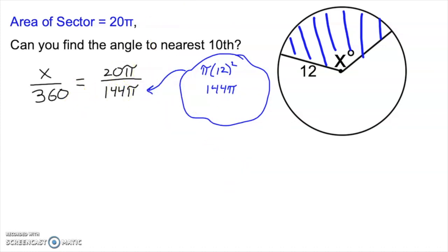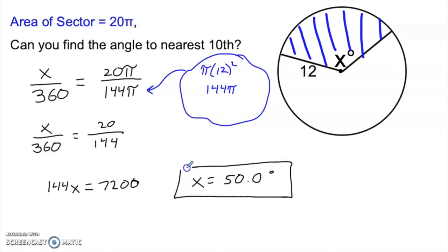Now I just need to solve for x. Before I cross multiply, I would look to simplify the right-hand side as much as possible. Notice that the pi is divided by pi, so pi over pi is 1, which means I won't have any pi in the answer. I still have 20 over 144, which reduces to 5 over 36. But you might not see that, so this one I'll just live with. Cross multiplying, we get 144x equals 7200, which makes x 50 degrees. Now be careful. They asked for the answer to the nearest tenth, so you actually want to write 50.0 degrees, particularly if this is a standardized test.